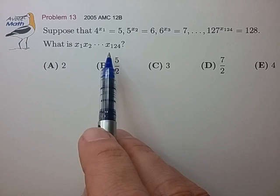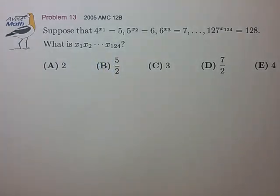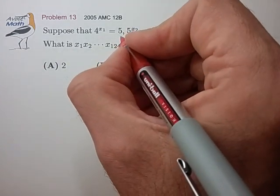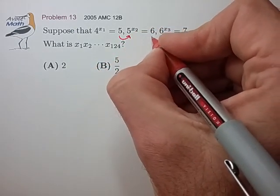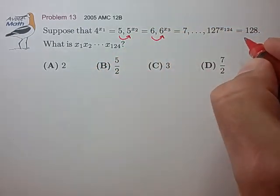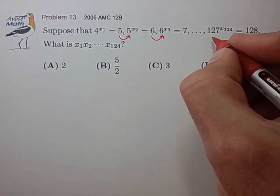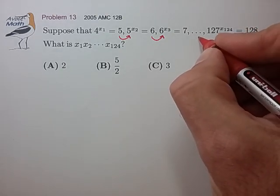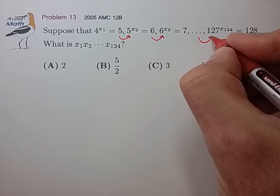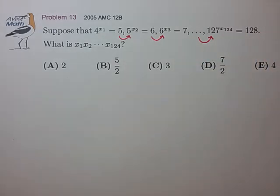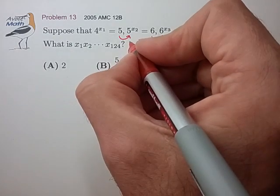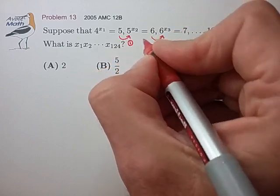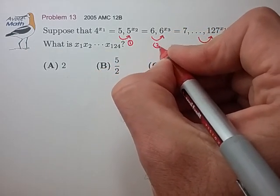I notice a possible chain of substitutions where 5 can get substituted in here, 6 can get substituted in here, and so on, and this last substitution would be something substituted in for 127. So let's try a few steps in that direction and see if that gets us somewhere useful. Let's call this first substitution number 1, second substitution number 2.